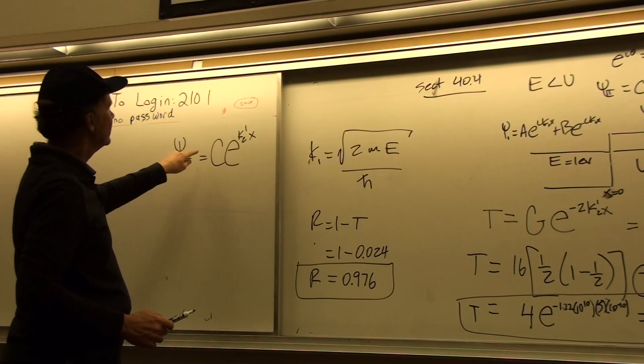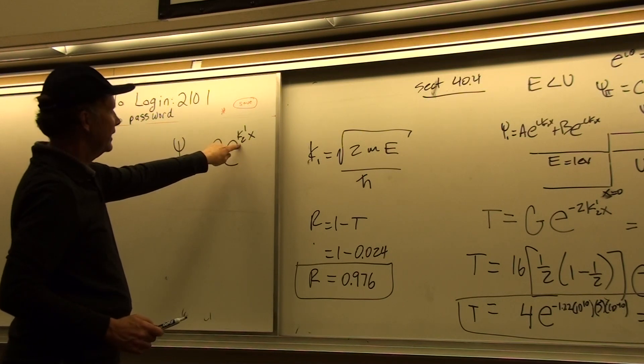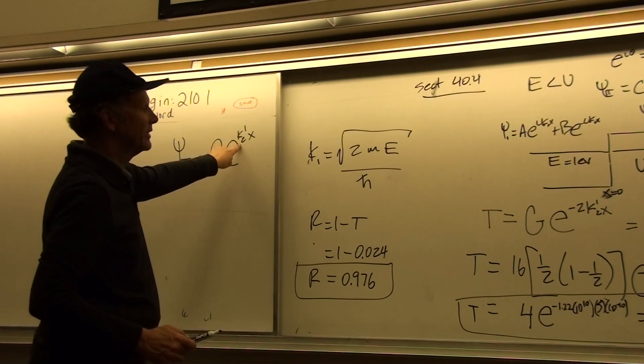And so psi squared then is going to go like c star c times e to the minus 2 k2 prime times x.